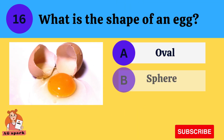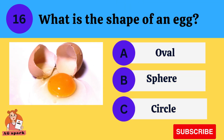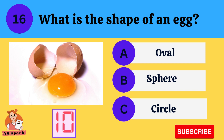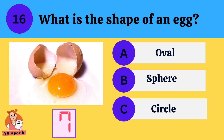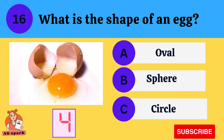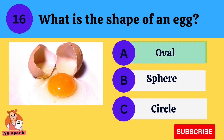What is the shape of an egg? Oval, sphere, circle. Answer: Oval.